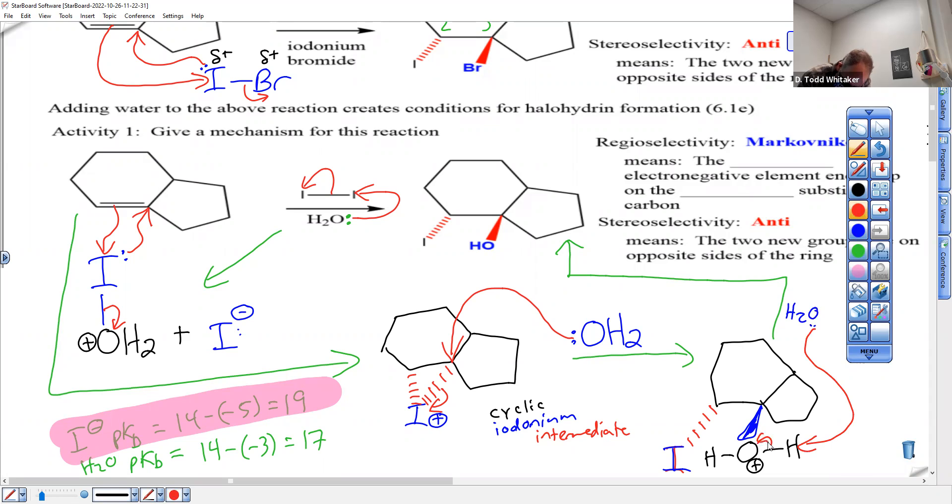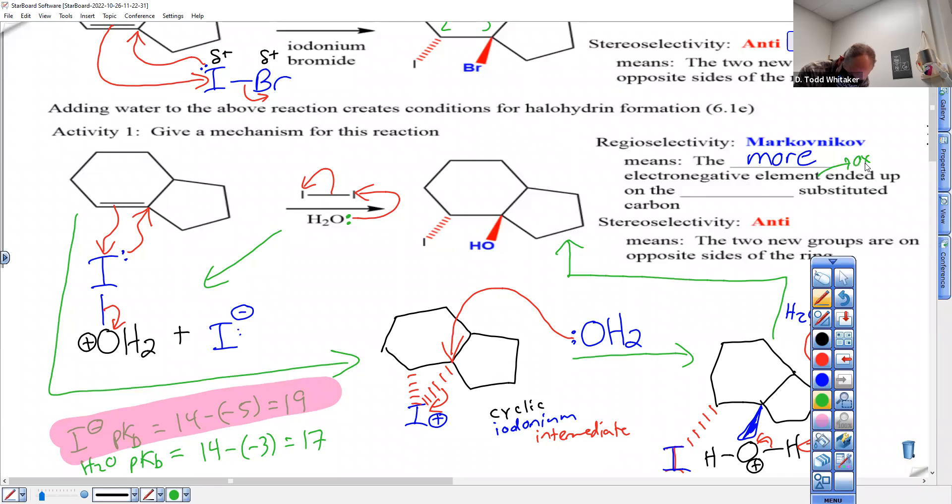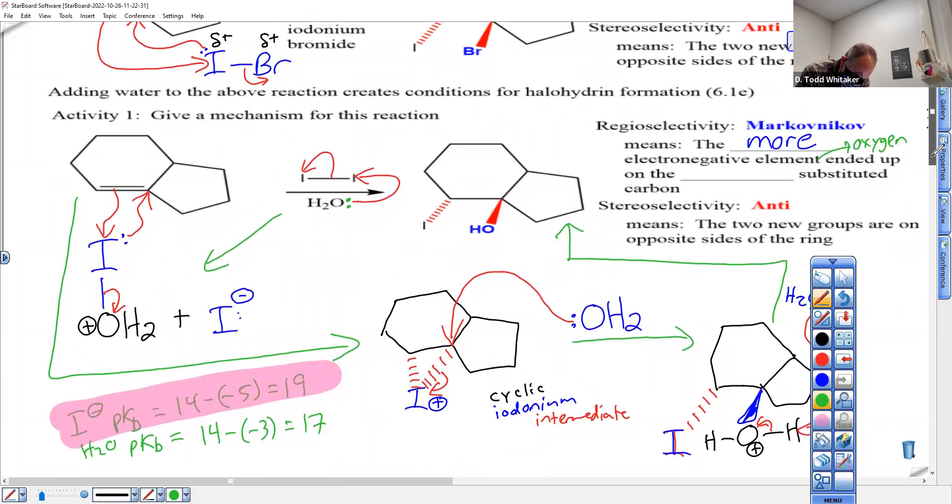There we go. And we're almost there. We got to finish our blanks for Markovnikov and anti. The more electronegative element, it's OH this time. Just remember: more electronegative element here, oxygen. Here, bromine. And ended up on the more substituted carbon. That's what Markovnikov is about: more more. Remember that? More what, more what? More electronegative on the more substituted.